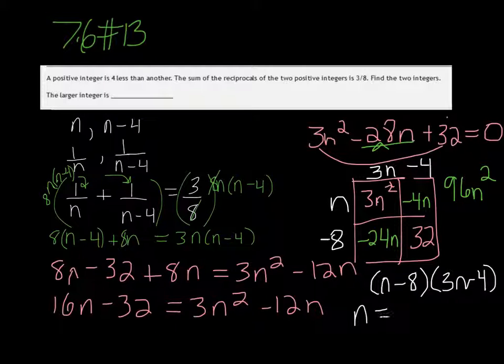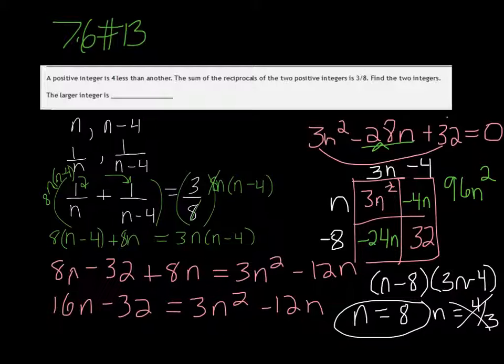So you get that n equals 8, and n equals 4 thirds. So 4 thirds is not the larger one. 8 is. So 8 is going to be your answer.